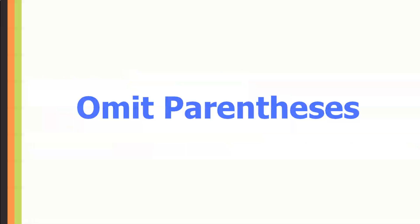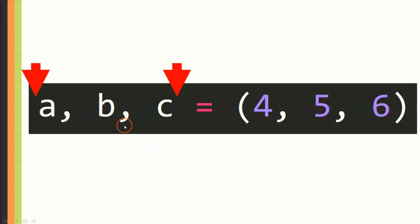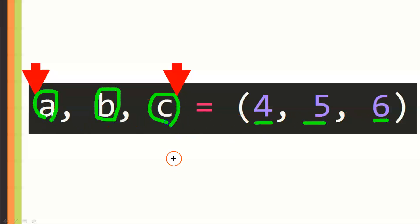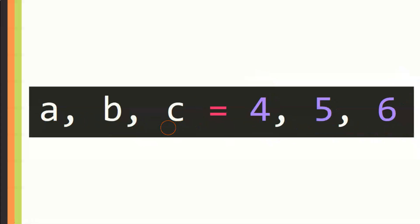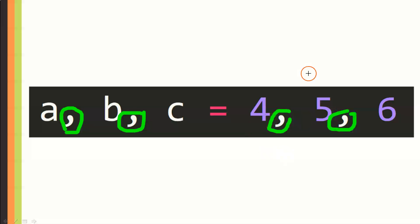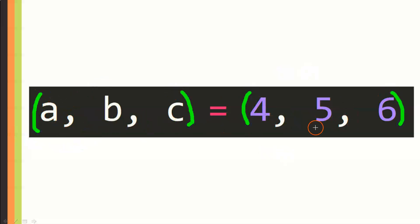Another important tip is that you can omit parentheses, as long as it doesn't affect readability. You can omit the parentheses on the left-hand side tuple, and it will work exactly as expected. You can also omit parentheses on the right-hand side, or omit them completely on both sides. Notice that you still need to separate elements with commas — when you do that, Python automatically interprets it as a tuple, even without the explicit parentheses.